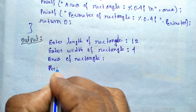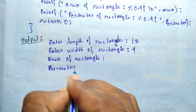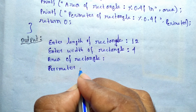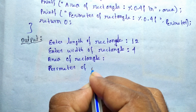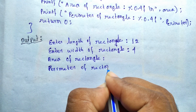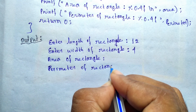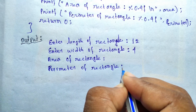Great job, guys. You've just written a program in C to compute the area and perimeter of a rectangle. As you saw, a few lines of code can transform a simple formula into a practical tool.